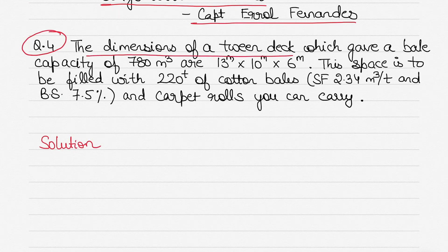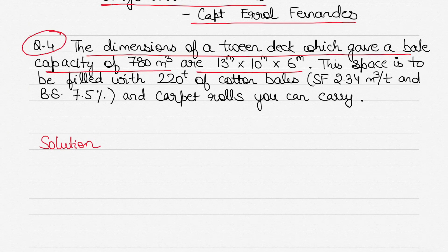Today's question: the dimensions of a twin deck which gave a bale capacity of 780 cubic metres are 13m × 10m × 6m. Those are the dimensions of the twin deck that give you its volume, along with its bale capacity. Bale capacity is the cubic capacity of a space where the breadth is taken from inside the cargo battens and the depth from the top of the wood sheathing on the tank top to the underside of the deck beams.